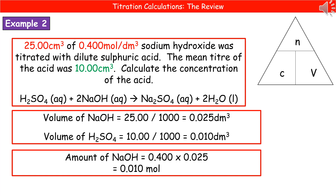What we went through there was a simple one-to-one ratio, but they're not always going to be one-to-one. So I've given you a second example, which takes us through where we've got one mole of a reactant reacting with two moles of the other. Again, I've started by highlighting the key bits of information for each reactant in different colours, converted the volumes into decimetres cubed by dividing by 1,000, and worked out the amount of sodium hydroxide — 0.010 moles.